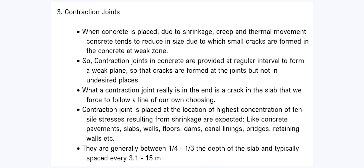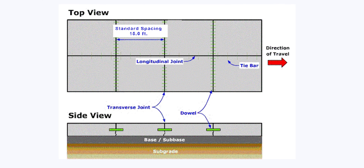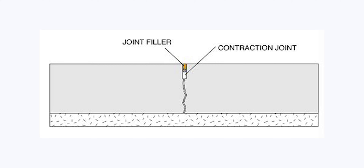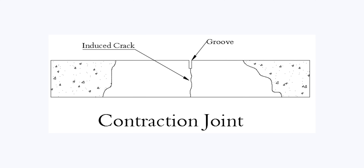Next, we will talk about contraction joints. When concrete is placed, due to shrinkage, creep, and thermal movement, concrete tends to reduce in size, and small cracks are formed at weak zones. Contraction joints are provided at regular intervals to form a weak plane so that cracks form at the joints and not in undesired places. In the end, a contraction joint is a crack in the slab that we force to follow a line of our own choosing. It is placed at the location of highest concentration of tensile stresses resulting from shrinkage.